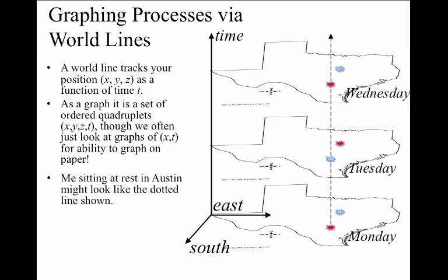A simplest possible world line for an object like me might be the case where I just stay in Austin all the way through this entire description, Monday through Wednesday. In that case, the world line, the line that describes my history, just would be a vertical line like the one shown.